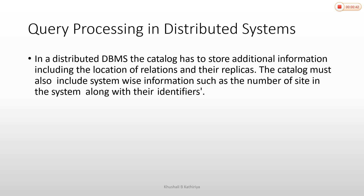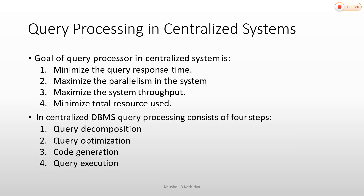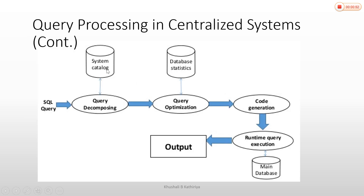First, we talk about Query Processing in a centralized system. In a centralized system, the catalog stores information including overall system details, site details, where data is stored, and location details. You can store data and location details in this catalog.